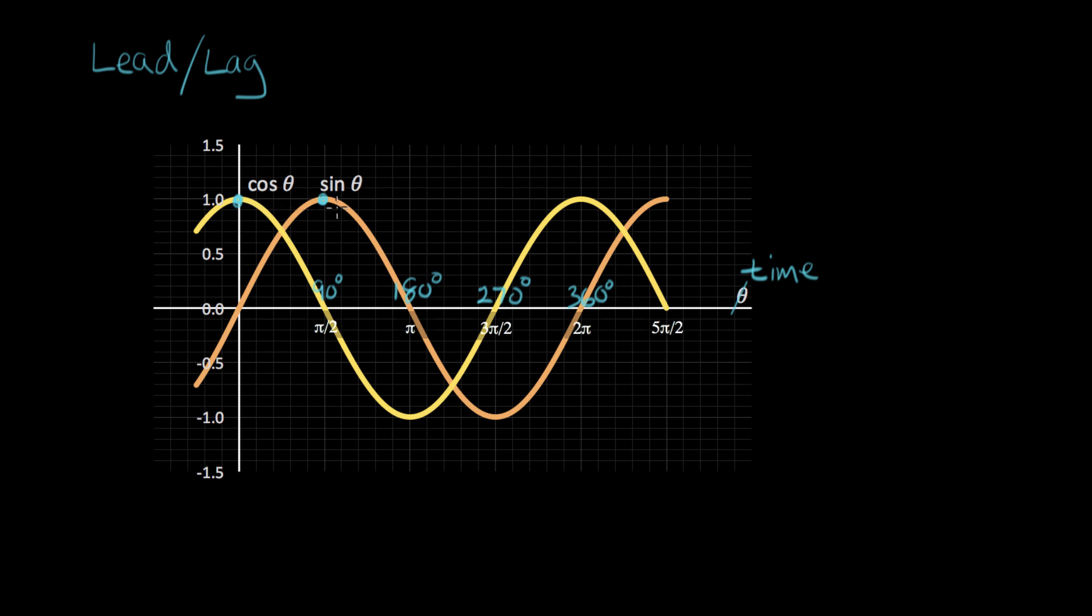This is increasing time, going this way. So the sine is delayed compared to the cosine. The peak here is delayed here. If I go down and look at these two peaks, we see the same relationship. This sine peak, in orange, is behind, is delayed from the cosine.